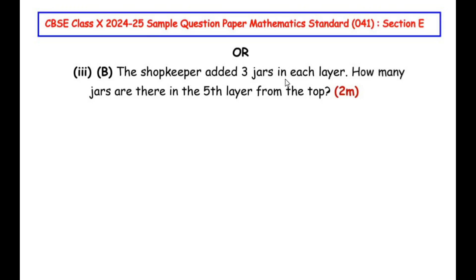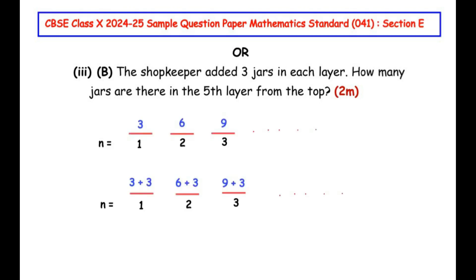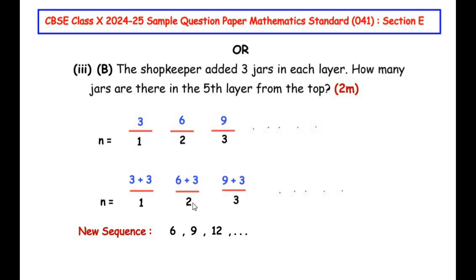Now for the OR question: the shopkeeper added 3 jars in each layer. How many jars are there in the fifth layer from the top? In the original sequence the first layer had 3 jars, second had 6, third had 9, and so on. Adding 3 to each layer creates a new sequence: 3+3=6, 6+3=9, 9+3=12, and so on.